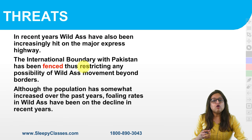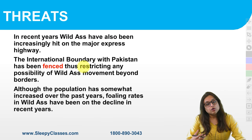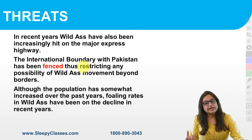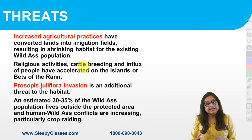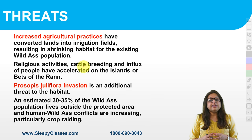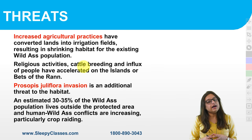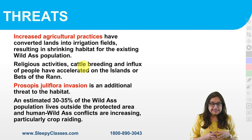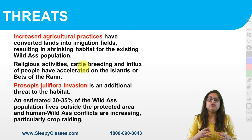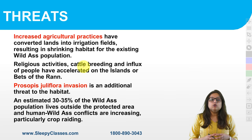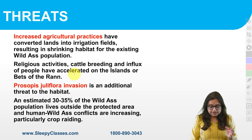Foal rates — the birth rates of Wild Ass — have also declined, meaning their breeding has also declined. Agricultural practices have converted land into irrigated fields, again decreasing habitat. Basically, habitat fragmentation due to different reasons — religious activities, cattle grazing, etc. — are all contributing factors.